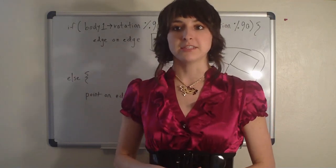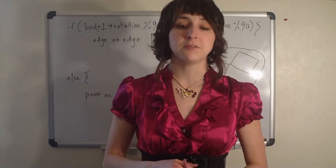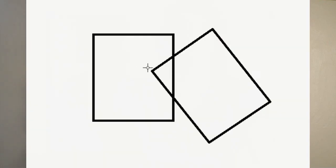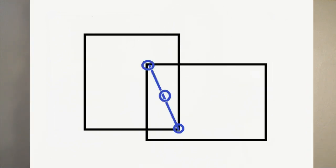In both cases, we need to find the point of B that deepest penetrates A. In point on edge point of contact, adding the collision resolution vector — which is the direction normal times the penetration depth — to this deepest penetrating vertex will give us the point of contact. In edge on edge point of contact, this penetrating vertex only serves as a factor in the equation to find point of contact.